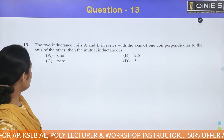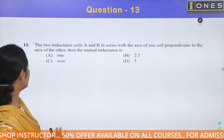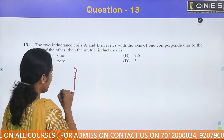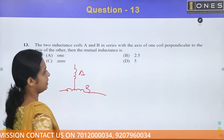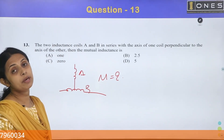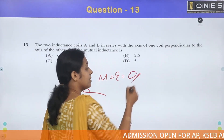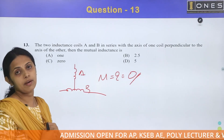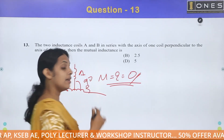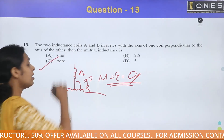Next question. Two inductance coils A and B are in series with the axis of one coil perpendicular to the axis of the other. What is the mutual inductance? When two coils are placed perpendicular to each other at 90 degrees, there is no magnetic coupling, so the mutual inductance value is zero. The answer is C.